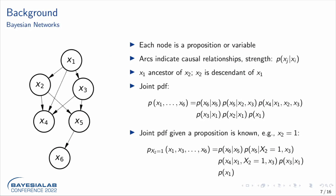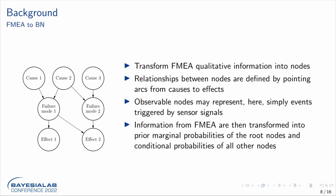Each node is a proposition or variable — that's the underlying basics of the Bayesian framework. The arc indicates causal relationships and their strengths. We have ancestors and descendants based on how the arcs are connected. Then we have the joint probability distribution — the joint PDF — and based on that, given a proposition where certain information is known (for example, X2 equals 1), we can calculate the probability of the joint PDF for that specific node within the system.